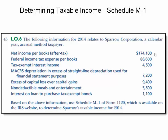Here's what we know. To the left of my mouse you can see the net income per books is $174,100. The federal income tax expense per the books is $86,600. Tax exempt interest is $4,500. And MACRS depreciation in excess of straight line depreciation used for financial statement purposes was $7,200. The excess of capital loss over capital gains was $9,400.